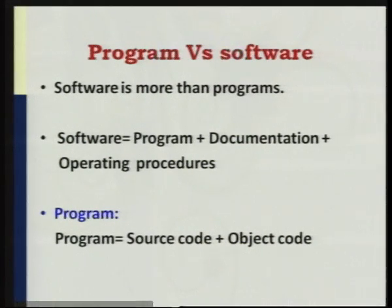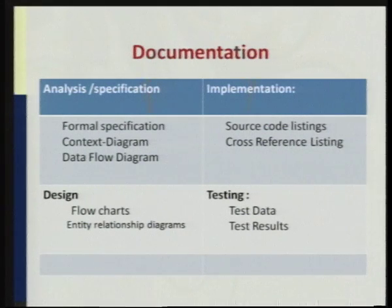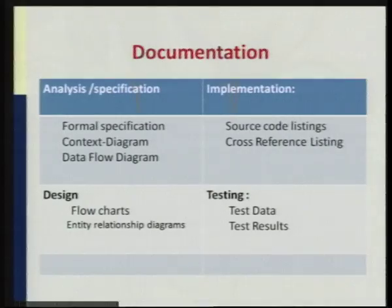Programs are nothing but both source code and object code. Documentation plays a major role in software engineering development. When you receive a product without manuals, it is not a satisfactory product. While preparing documentation, there are four different terms: analysis and specification, design, implementation, and testing. As Bauer said in his definition — sound engineering principles — documentation covers all four principles. Software engineering can in turn be called the ADCT principle: Analysis, Design, Coding, and Testing.